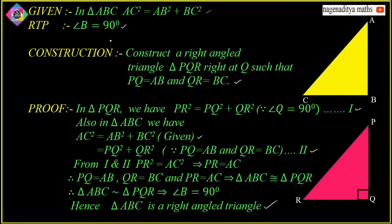Let me explain once again. Given in triangle ABC: AC² = AB² + BC². We have to prove angle B = 90°, i.e., triangle ABC is a right angled triangle. Construction: construct a right angled triangle PQR with right angle at Q such that PQ = AB and QR = BC. In triangle PQR, by Pythagoras theorem, PR² = PQ² + QR² — equation 1. Also given: AC² = AB² + BC² in triangle ABC.